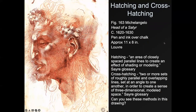Hatching and cross-hatching are techniques used by people drawing when they can't change the thickness of their line. With pen, you can create shadows using hatching — an area of closely spaced parallel lines to create an effect of shading or modeling. You can see hatching in the neck area. Cross-hatching — two or more sets of roughly parallel overlapping lines set at angles to one another — creates a sense of three-dimensionality and modeled space, as seen on the cheek to create the prominent cheekbones.